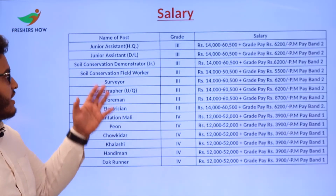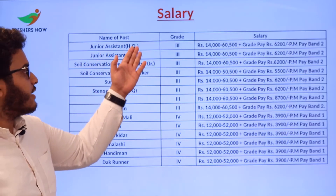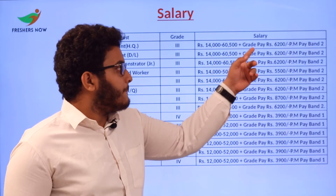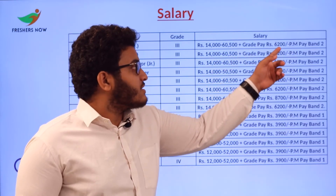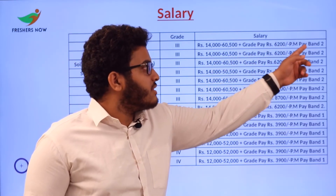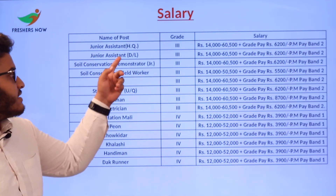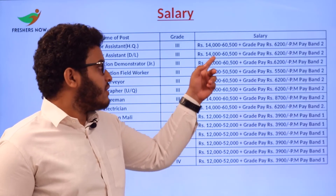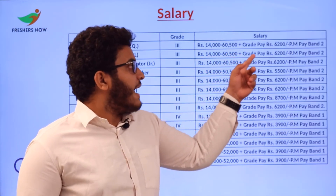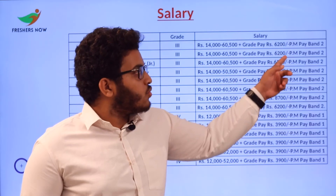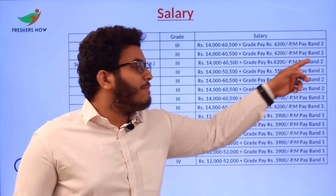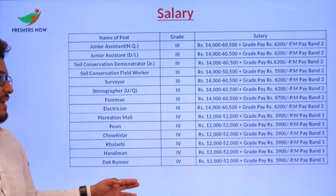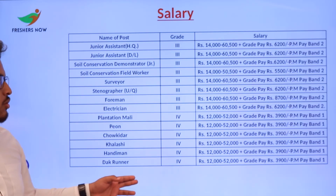Now let's see the salary package for each post. Junior Assistant Headquarters Grade 3 salary is 60,500 rupees plus grade pay 6,200 rupees per month, Pay Band 2. Junior Assistant DL Grade 3 salary starts from 14,000 to 60,500 rupees plus grade pay 6,200 per month, Pay Band 2. Please go through the details regarding salary for each post.